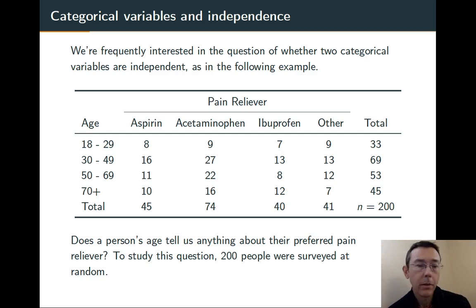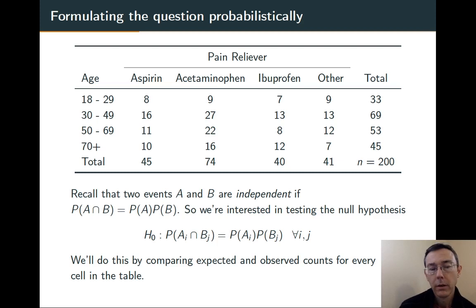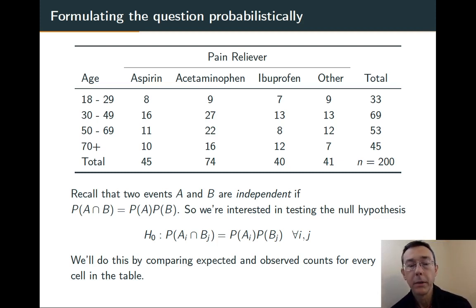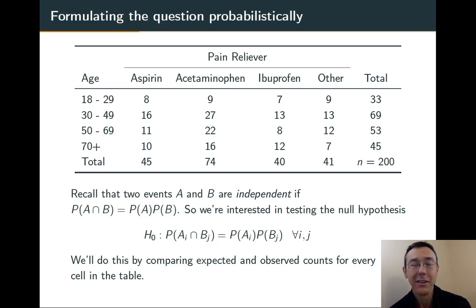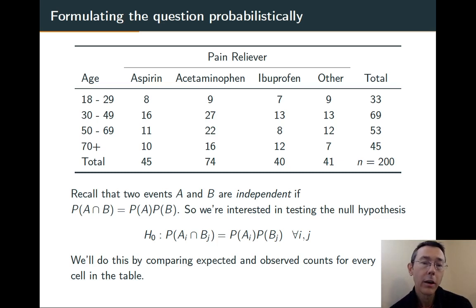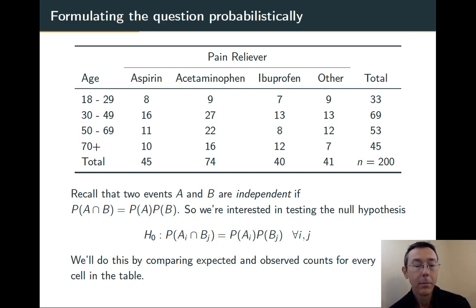In this particular example, we're going to be looking at ages and preferences for pain relievers. Let's remember the definition of what it means probabilistically for two events to be independent. Two events are going to be independent if the probability of both of them happening is just the product of the individual probabilities. When we talk about categorical variables being independent, we're talking about the probabilities of each particular combination of outcomes equaling the product of the individual probabilities.